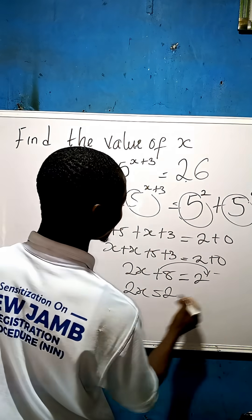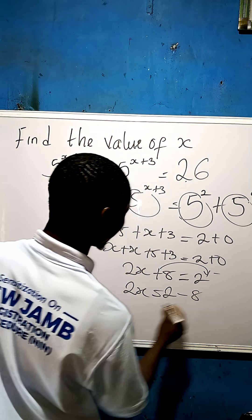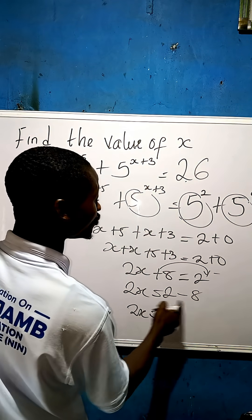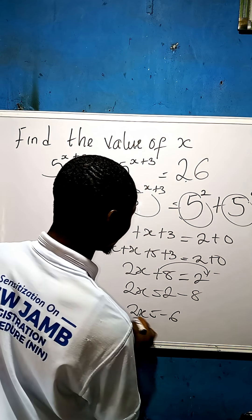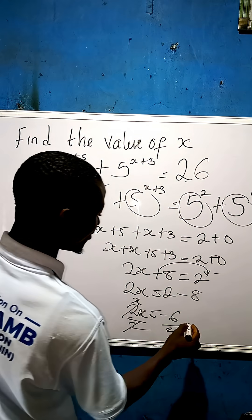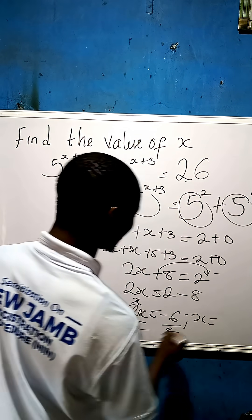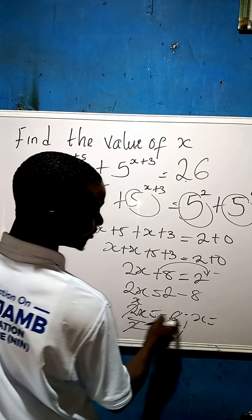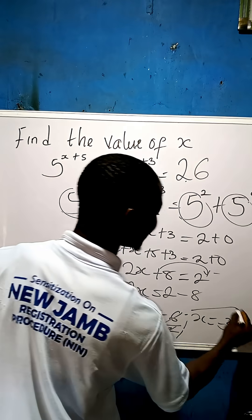When this one is coming here there's a plus; when it's crossing here it becomes minus. So 2 minus 8. Now 2x is equal to 2 minus 8, which is minus 6, divided by 2. 2 cancels 2. X is now equal to minus 3. So this is our final answer.